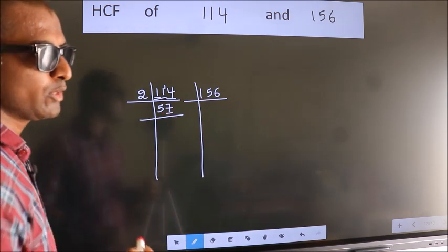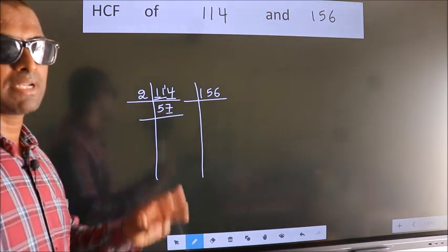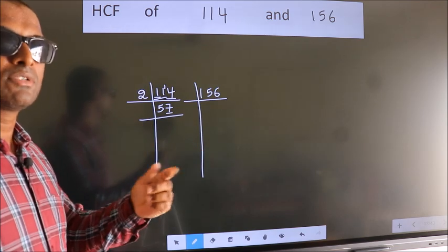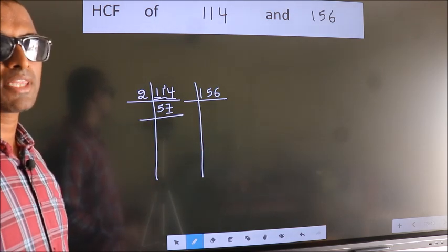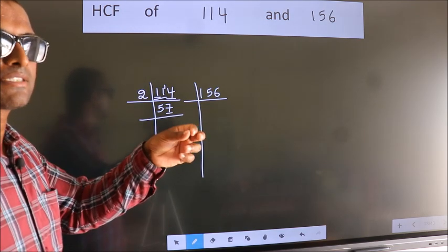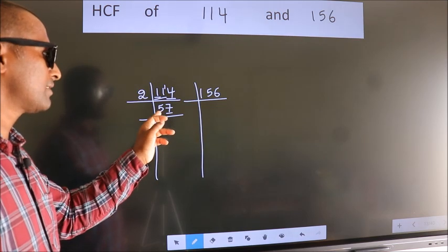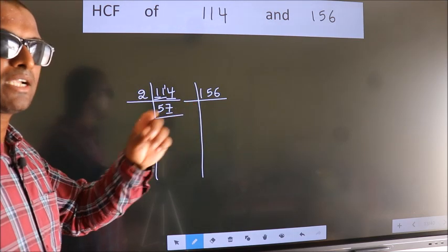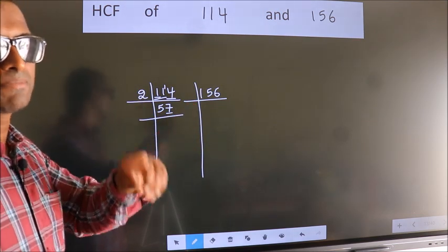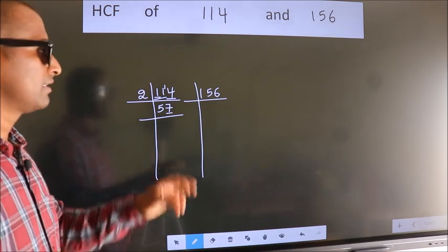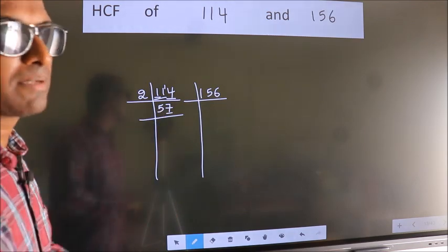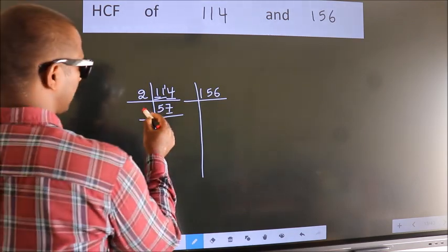So this number is not divisible by 2. Next, prime number 3. To check divisibility by 3, for that we should add the digits. 5 plus 7, we get 12. Is 12 divisible by 3? Yes. So this number also divisible by 3. So take 3.